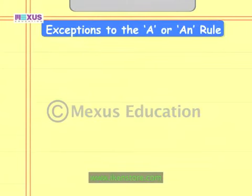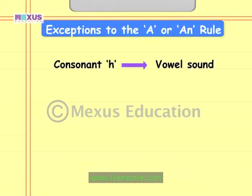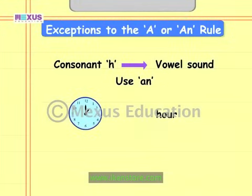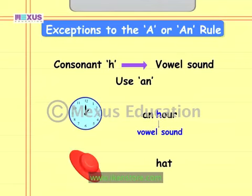Sometimes a word may begin with a consonant, but we use 'an' before it. Sometimes words that begin with the consonant H have a vowel sound, or the H is silent — we use 'an' before such words. For example, in the word 'hour', the H is silent and it begins with a vowel sound 'ah', so we say 'an hour'. The word 'hat' also begins with H, but here the H is sounded, so we use 'a hat'.